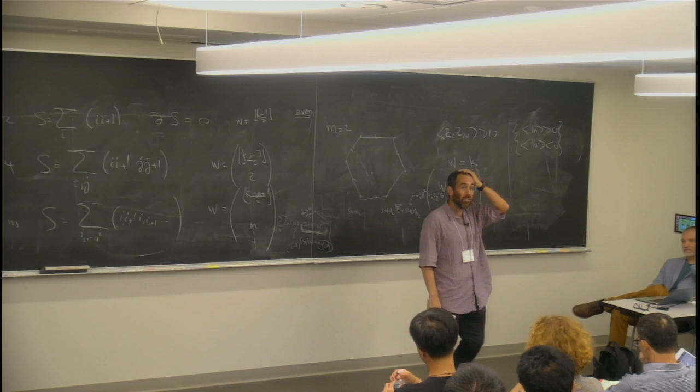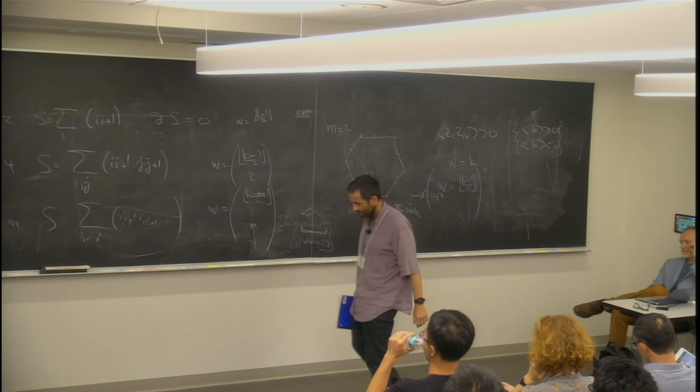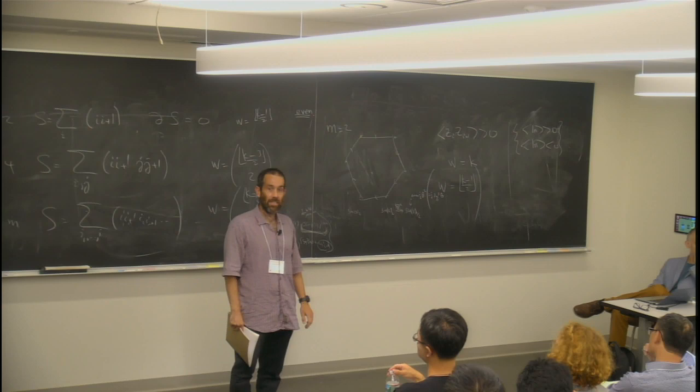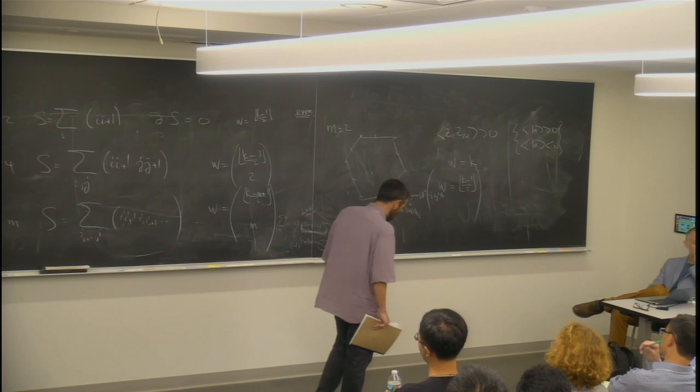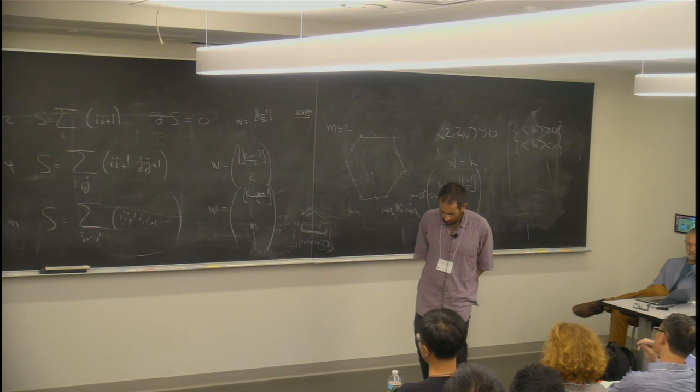But for distinguishing paramagnetic phases, it turns out that there are a lot of different paramagnetic phases, and a very useful notion is the notion of anomaly, which I guess, I think will come up in all of the talks in this session. And anomaly, I guess we already heard about it from Zohar,